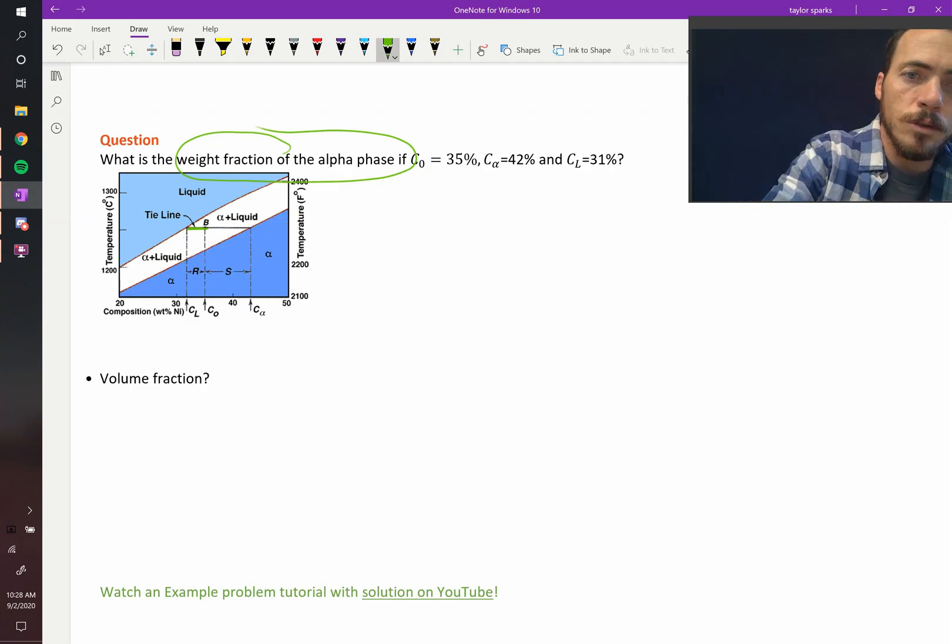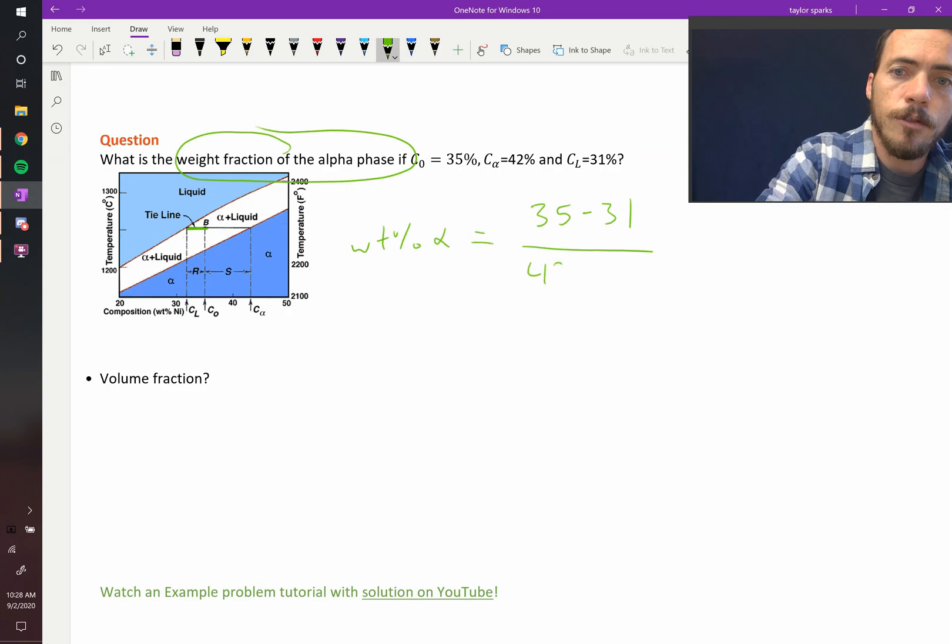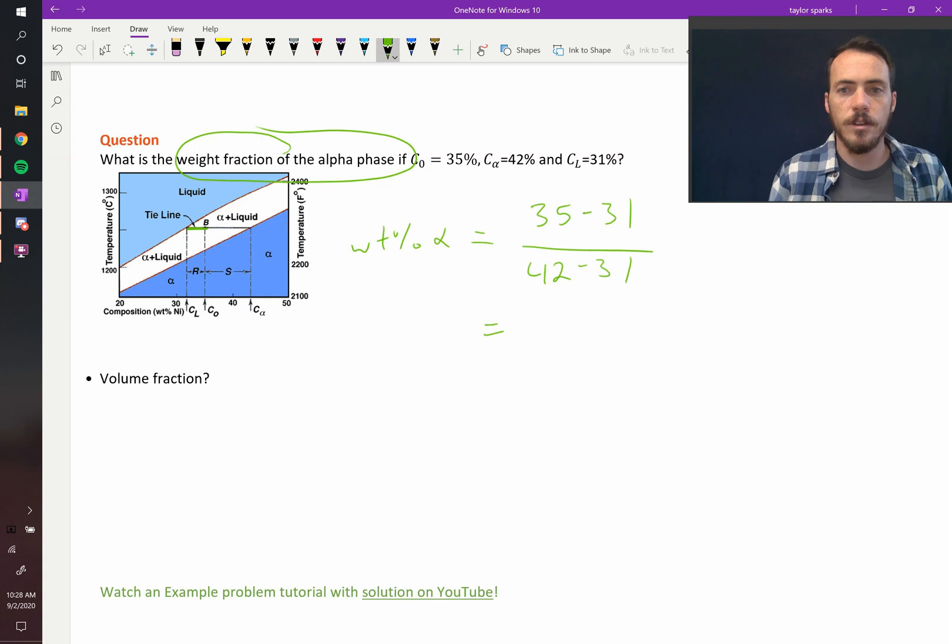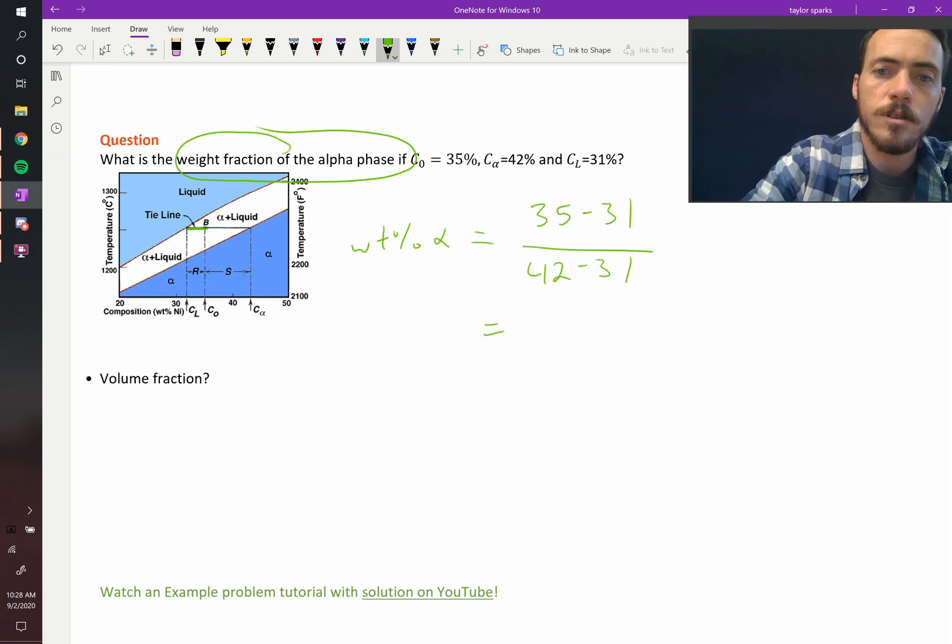So we're going to do... So the weight percent of alpha is going to be equal to 35 minus 31 divided by 42 minus 31. When I plug that into my calculator I find that it is 57.14. So 57.1 weight percent alpha.